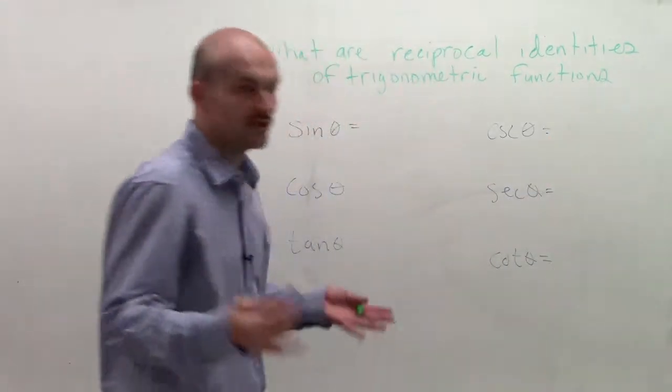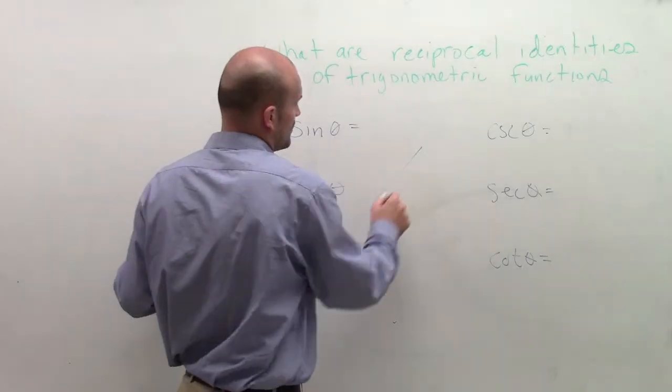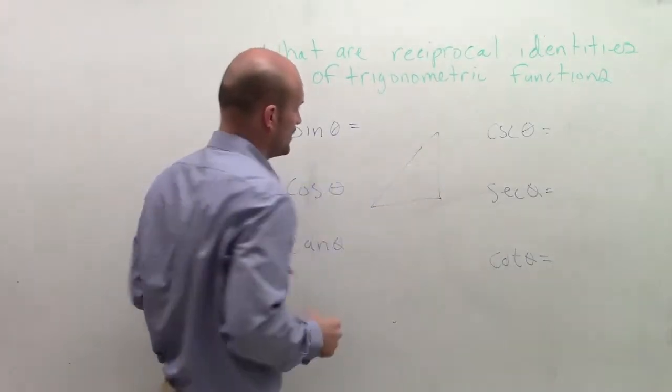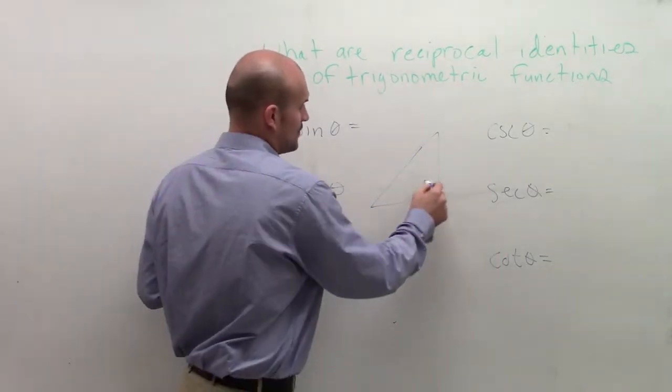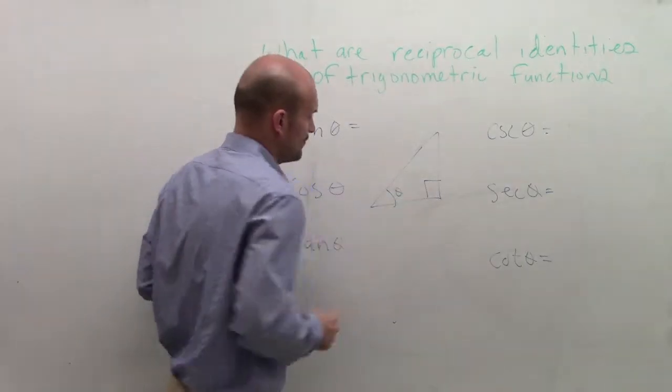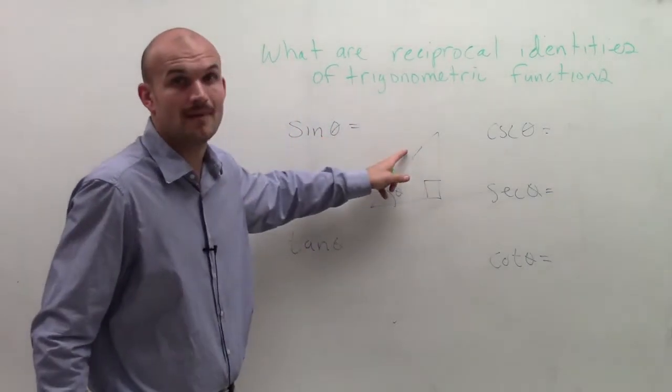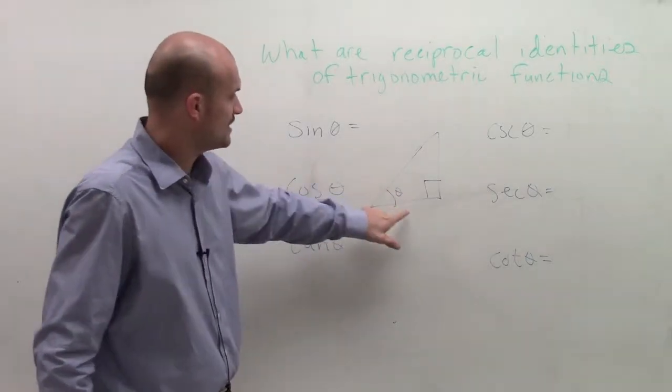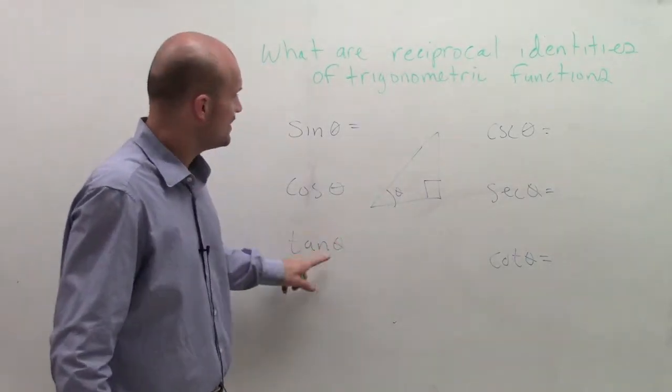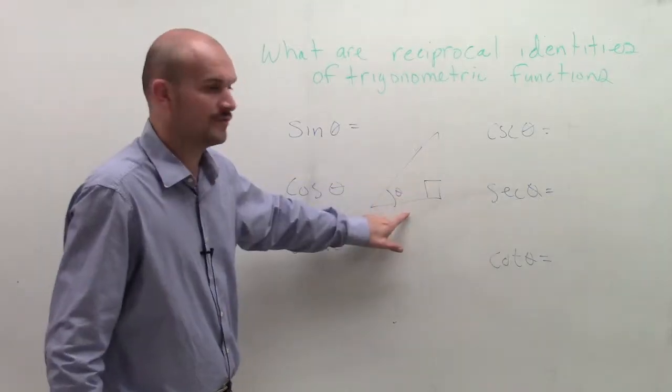Now, if you remember, when we were drawing a triangle, we went back over the triangle. One thing we noticed was, when drawing a triangle, we had a right angle and an angle theta. Remember, the sine represented the opposite side over the hypotenuse, the cosine represented the adjacent over the hypotenuse, and the tangent represented the opposite over the adjacent.